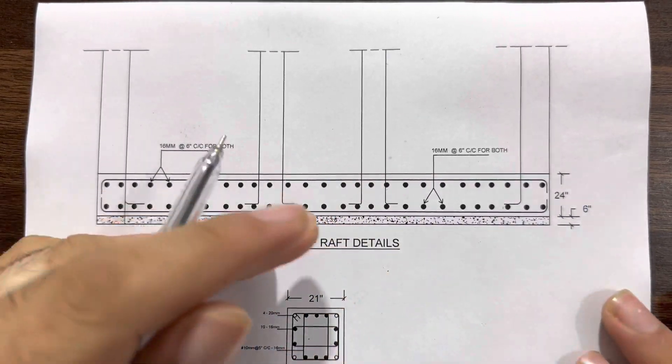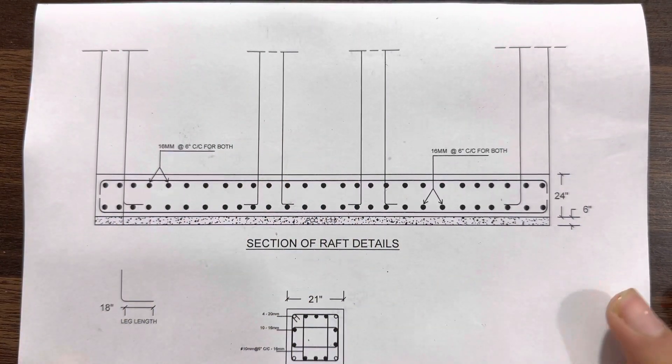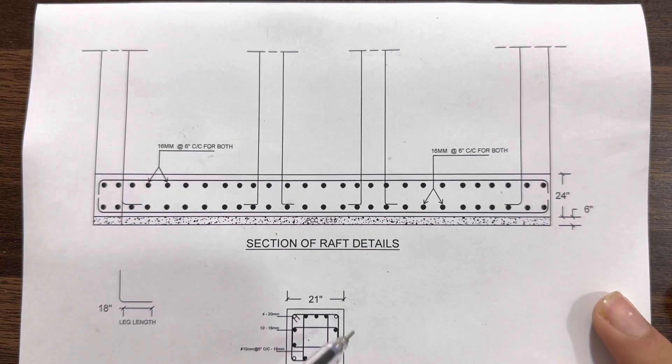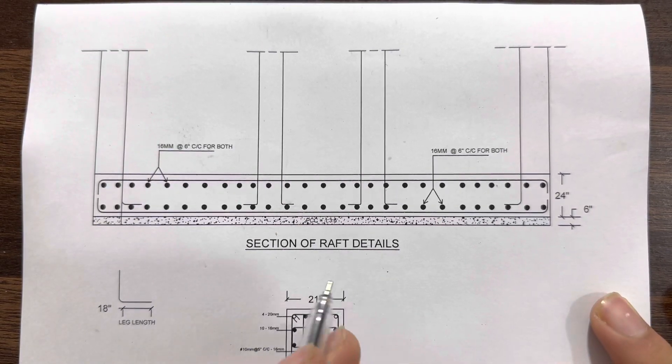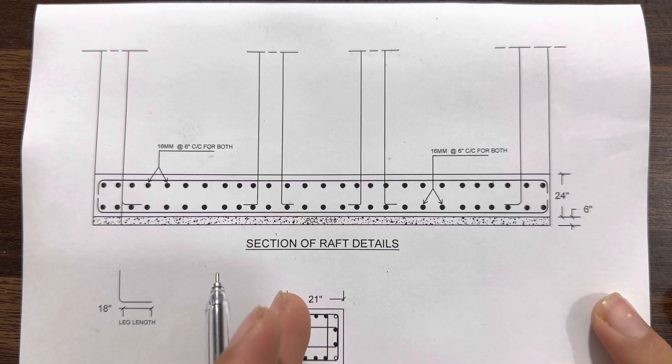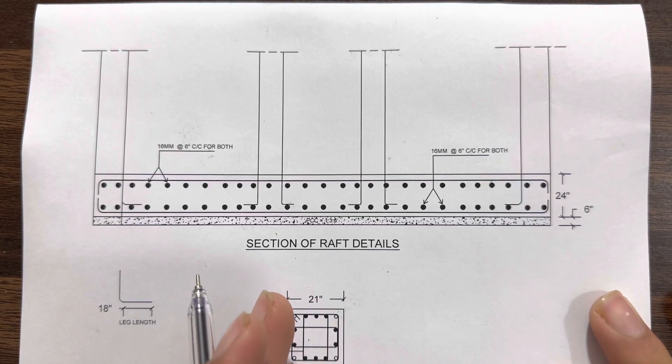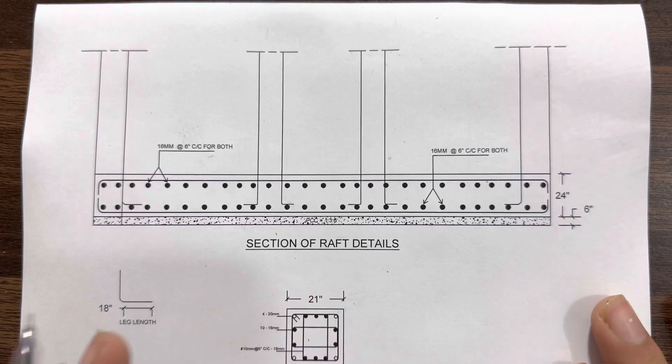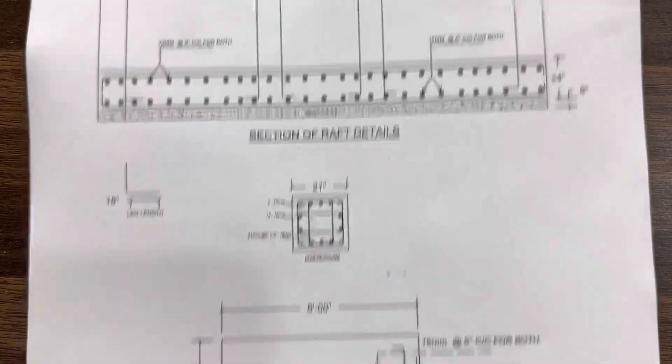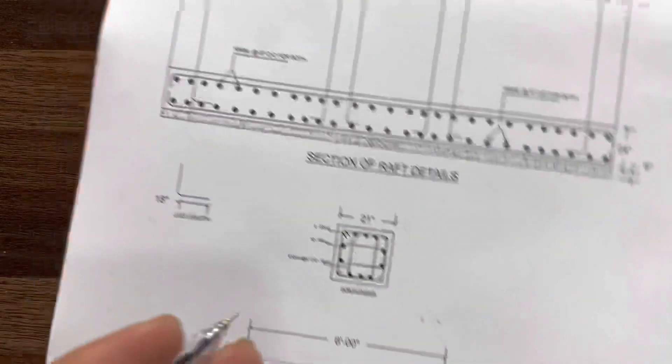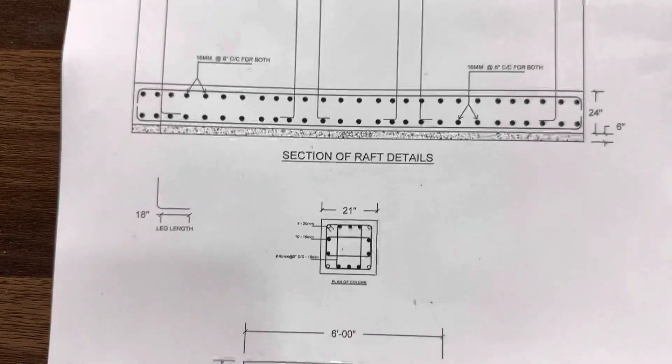Welcome back to Civil Engineers YouTube channel. Today in this short video lecture, I will guide you for section of raft foundation which I did for a five-story commercial building. Let me guide you how to read structural drawings. You can see this is the plan of footing, and because this is semi-raft, we have both footing and the section of its footing or raft.